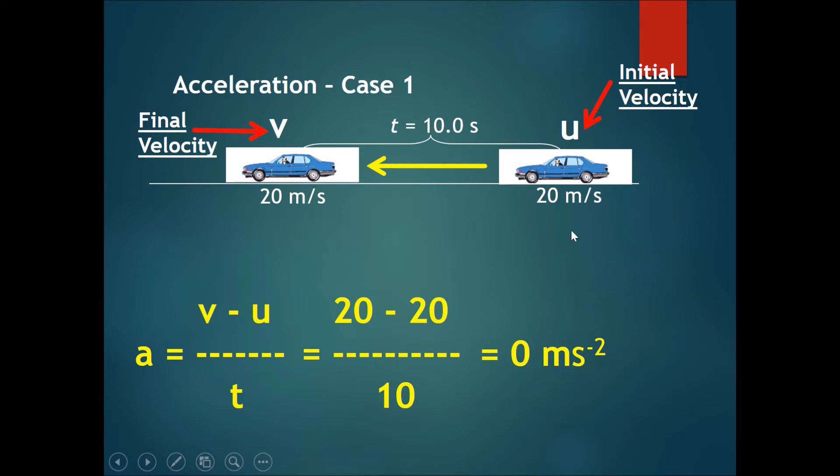So from here we can see that if there is no difference in the initial velocity and the final velocity, there will be 0 acceleration. The velocity is constant, therefore there will be no acceleration.